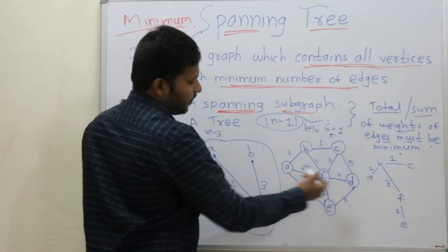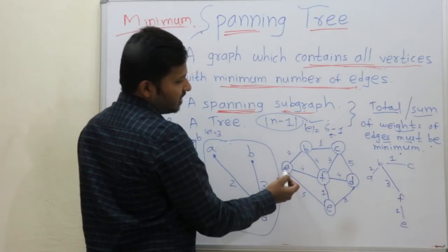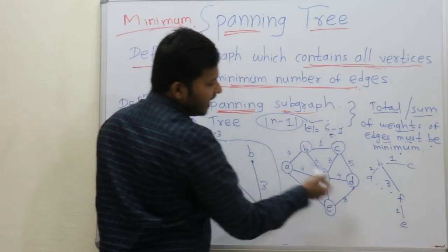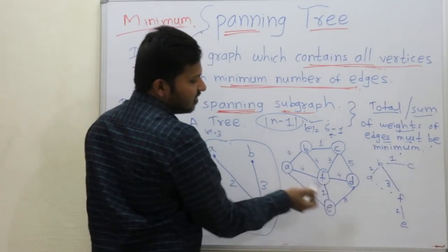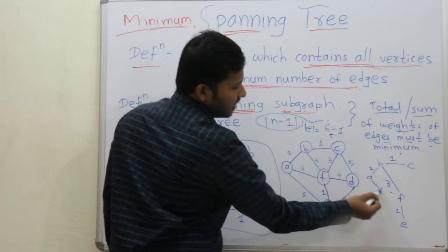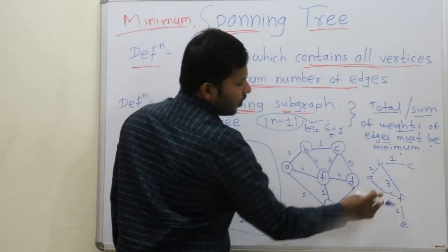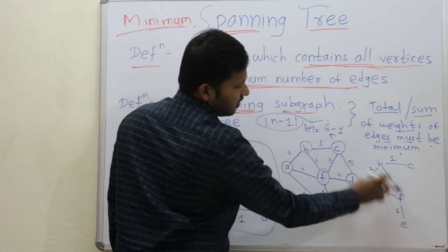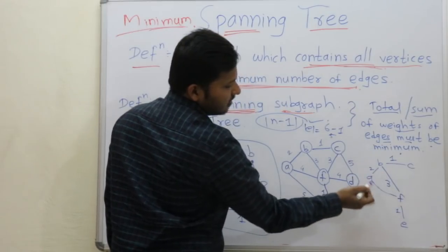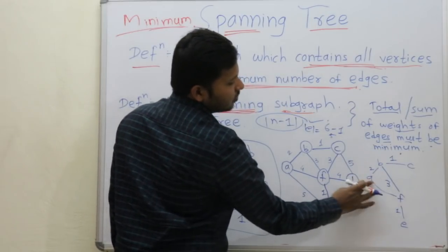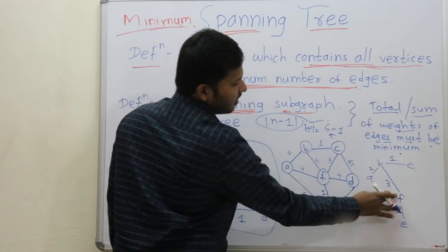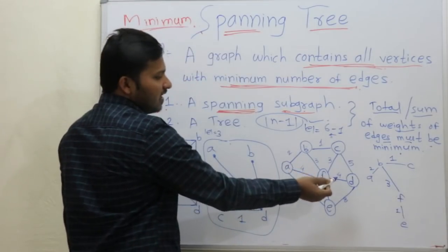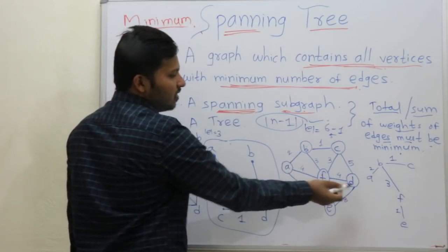So now go for upper value 4. Check edge A, F — that forms a cycle, so you should not take it. Now check edge F, D.